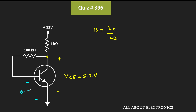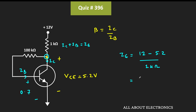The base-to-emitter voltage is equal to 0.7 volt. This current is the collector current, while this current is the base current, and the current flowing through this 1 kilo-ohm resistor is equal to IC plus IB, or in other words, that is equal to the emitter current. We know the voltage at this node is equal to 5.2 volt, and at this node the voltage is equal to 12 volt, so we can easily find the emitter current. The emitter current IE is equal to 12 volt minus 5.2 volt divided by 1 kilo-ohm, which is equal to 6.8 milli-ampere.